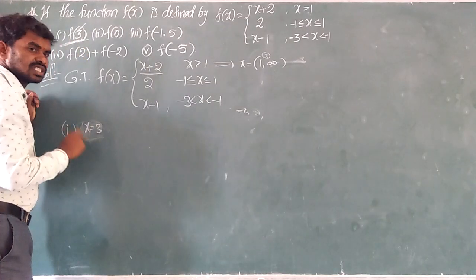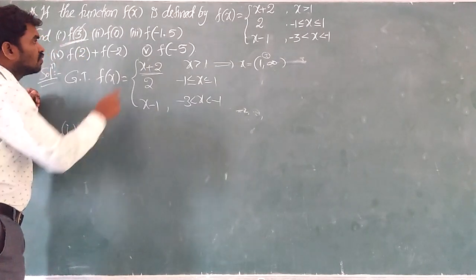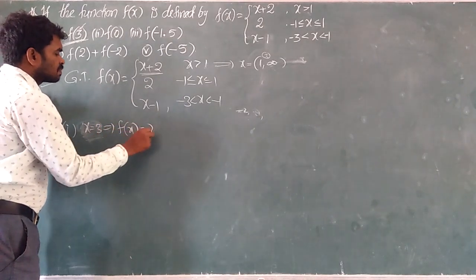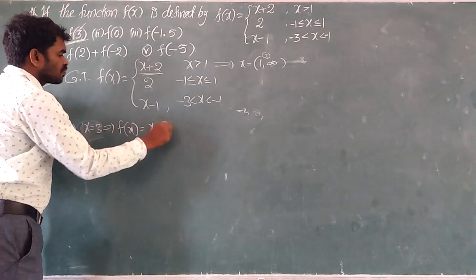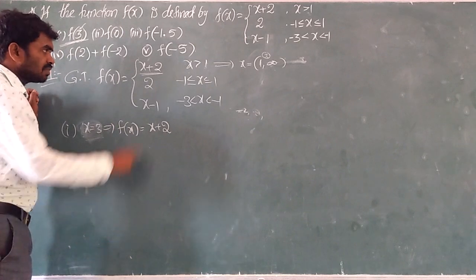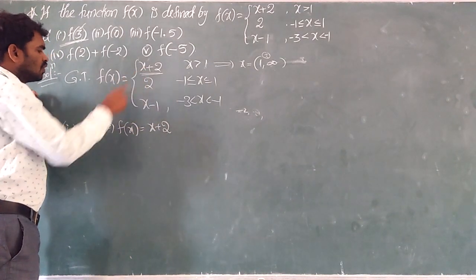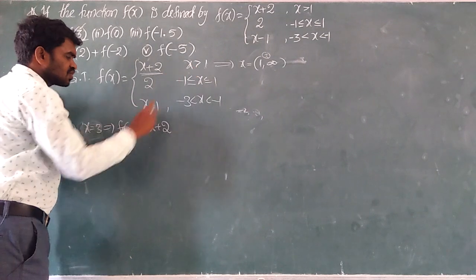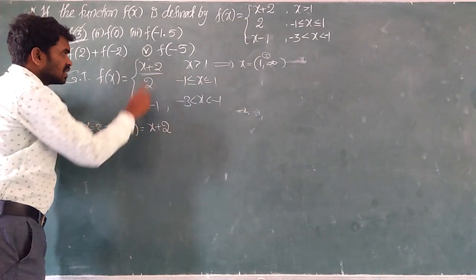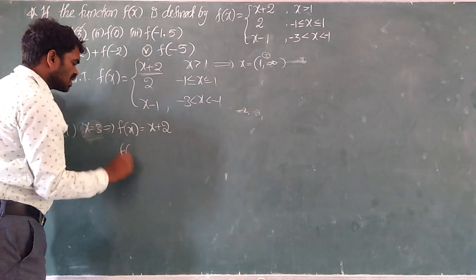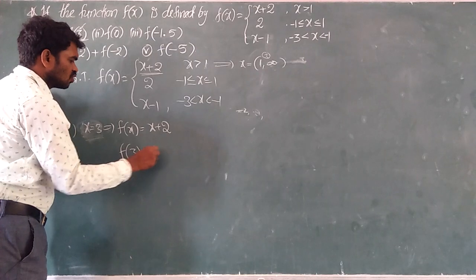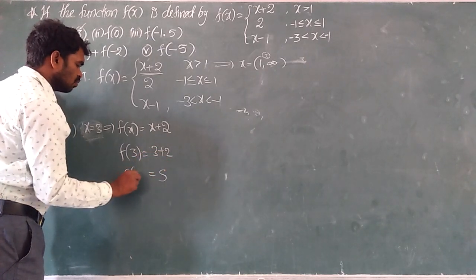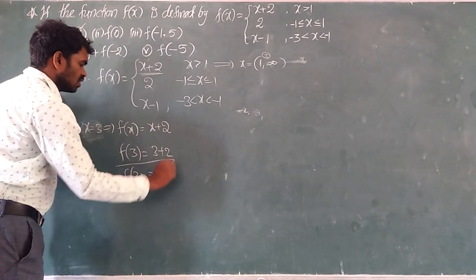So f of 3 means x equals 3, what is the function? f of x is taken as x plus 2. We are taking x plus 2 only to find f of 3, because 3 will come in this domain. So f of 3 equals 3 plus 2, that is 5. Very simple.